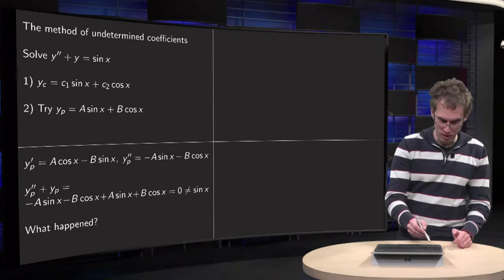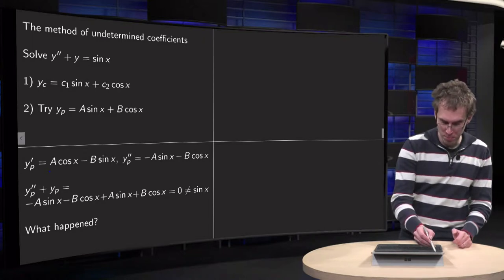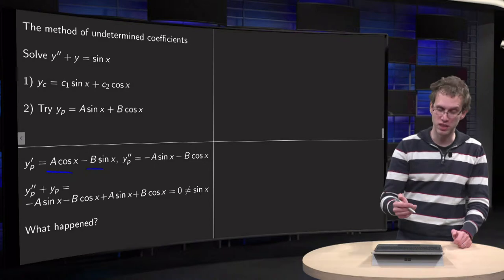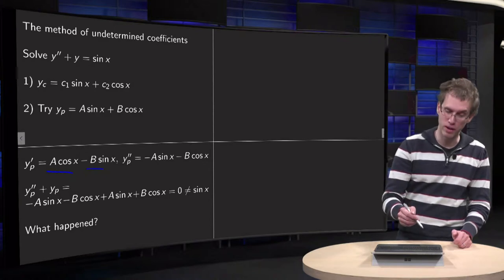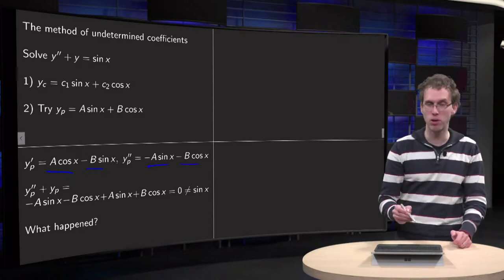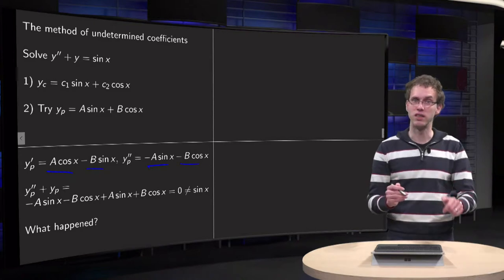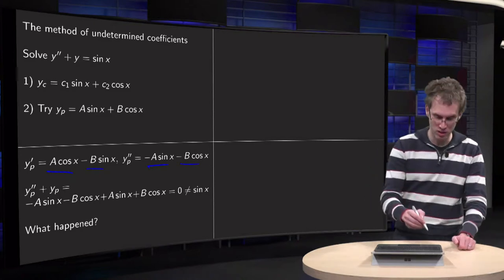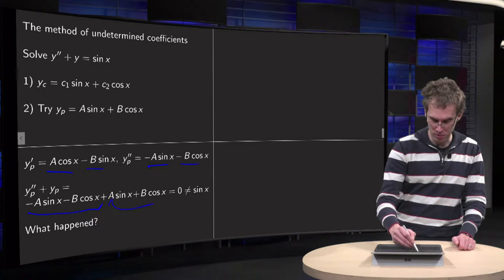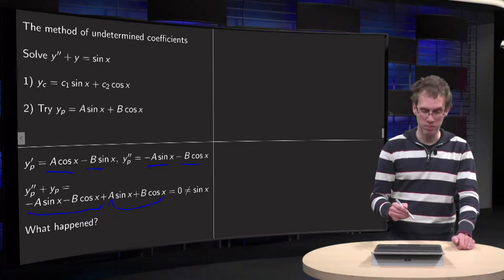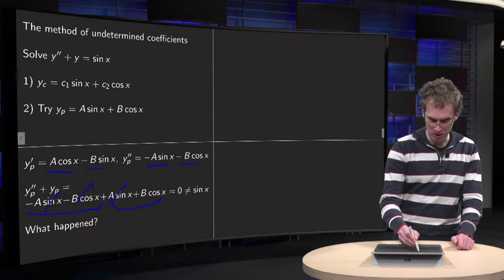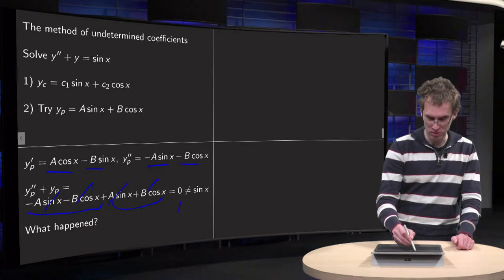We compute y_p'. That gives A·cos(x) - B·sin(x). Differentiating again we find y_p'' = -A·sin(x) - B·cos(x). Substituting into the differential equation, we get y'' + y_p. Those terms cancel out and those terms cancel out, so this is equal to zero.